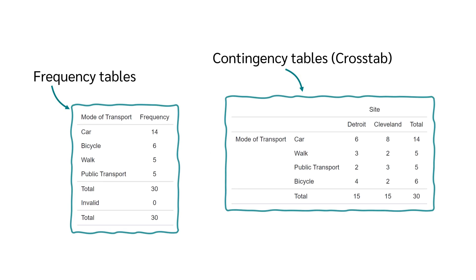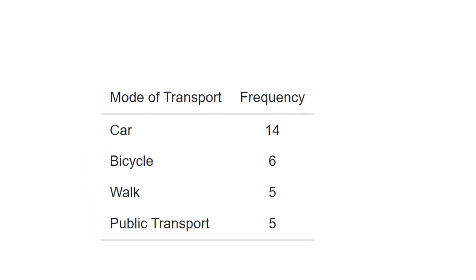Let's move on to tables. Here we will have a look at the most important ones, frequency tables and contingency tables. A frequency table displays how often each distinct value appears in a data set.